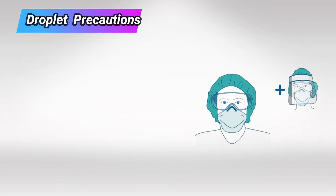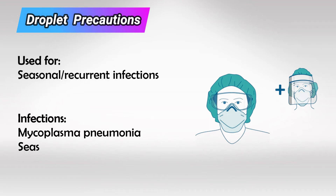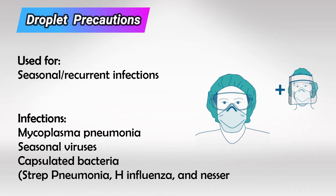Next we have droplet infections, and this includes Mycoplasma pneumonia, seasonal viruses like influenza and adenovirus, and encapsulated organisms like Strep pneumonia, H. influenzae, and Neisseria.